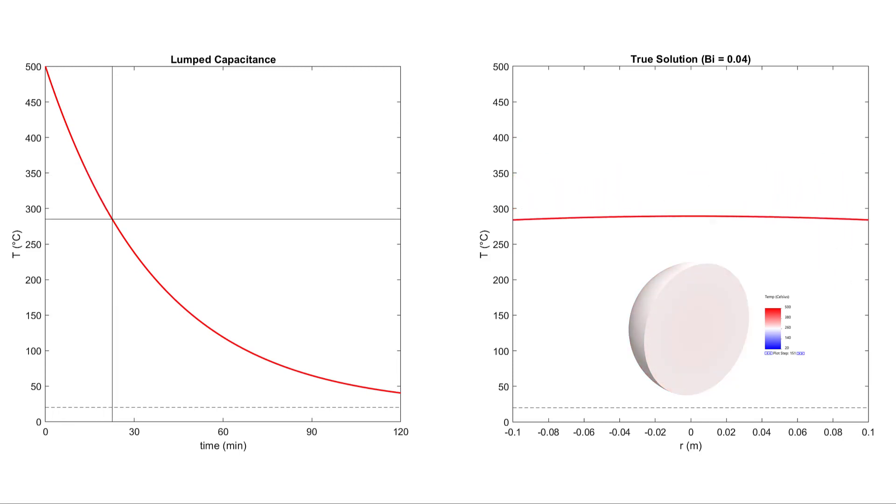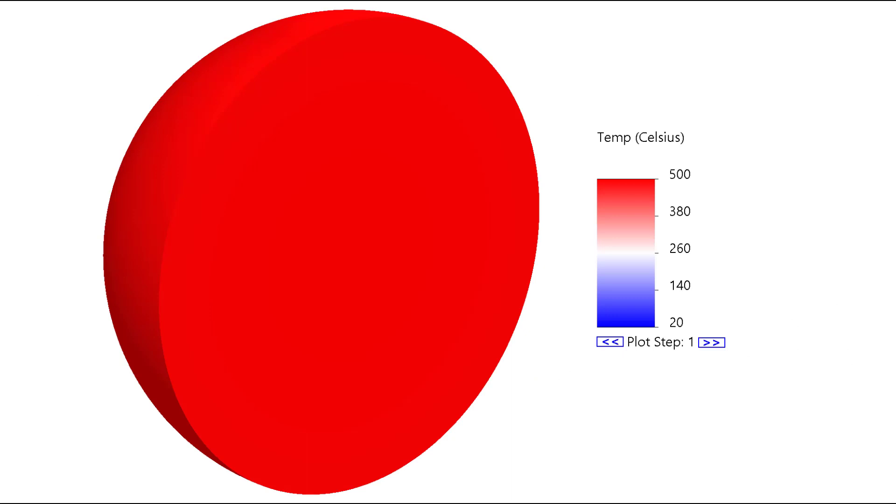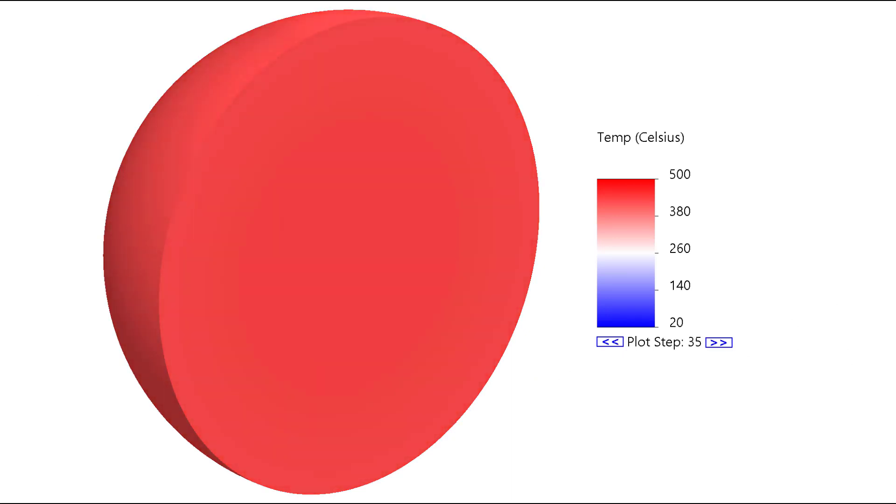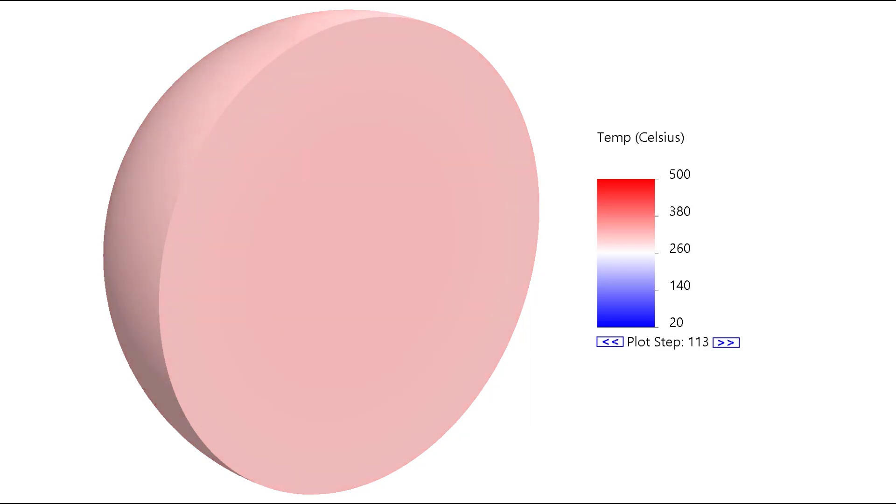And now I've increased the thermal conductivity even more, dropping the Biot number to 0.04. When I run this, we find excellent agreement between lumped capacitance and the true solution. In fact, the true solution shows very little radial dependence of temperature at all. To further demonstrate the uniformity of the cooling, I've run another FEA analysis, this time with a Biot number of 0.04 instead of 4. Each plot step in this simulation represents 10 seconds of elapsed time, and I've run the simulation for 30 minutes.